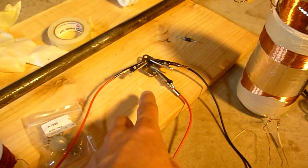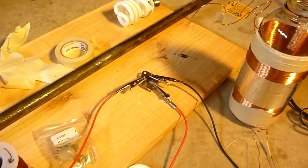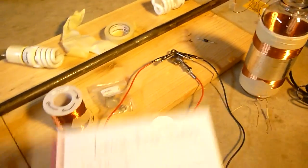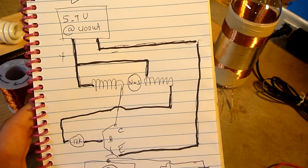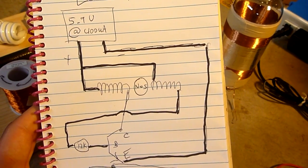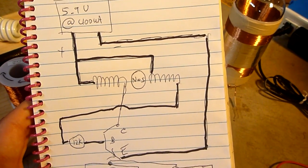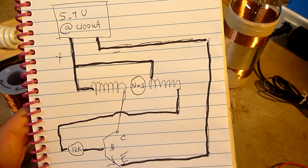2N3055 transistor. And then the end of this coil goes to the collector of the 2N3055 transistor. So again, it's basically the schematic. The schematic for what moves the rotor is the same as my pulse motor that I came up with, the jewel thief pulse motor.